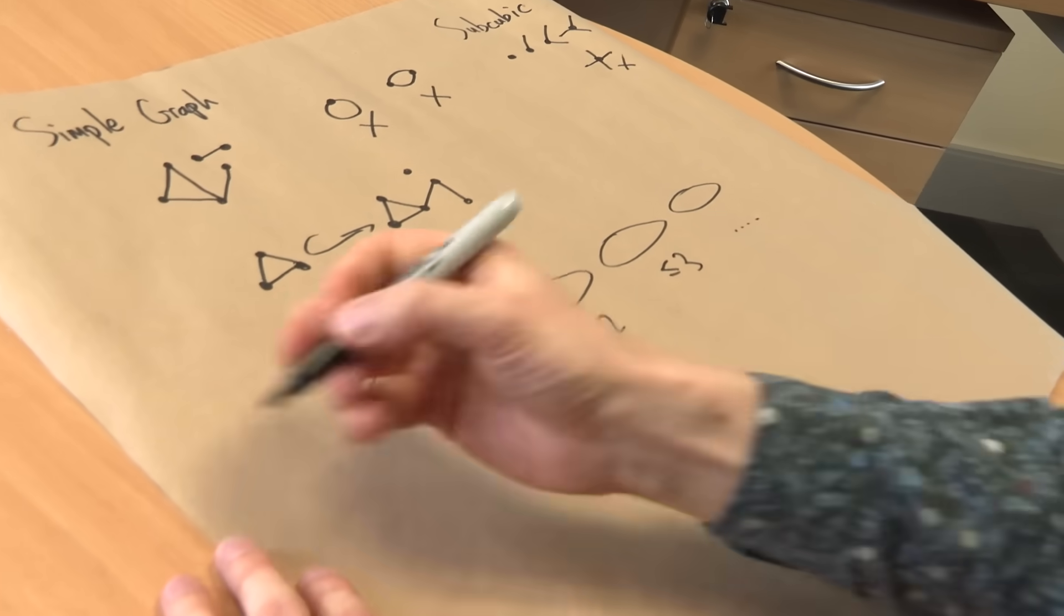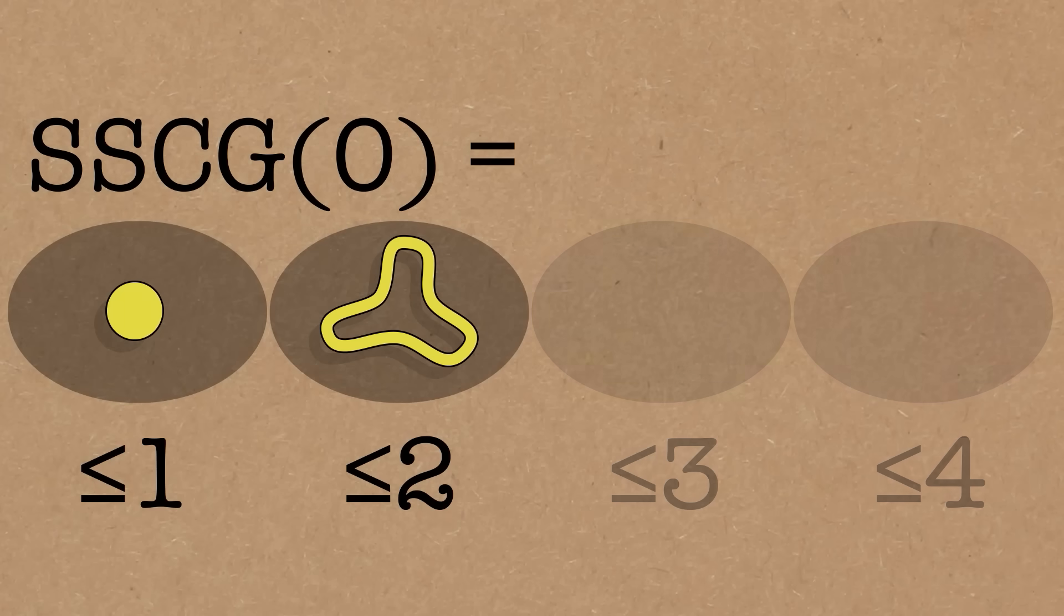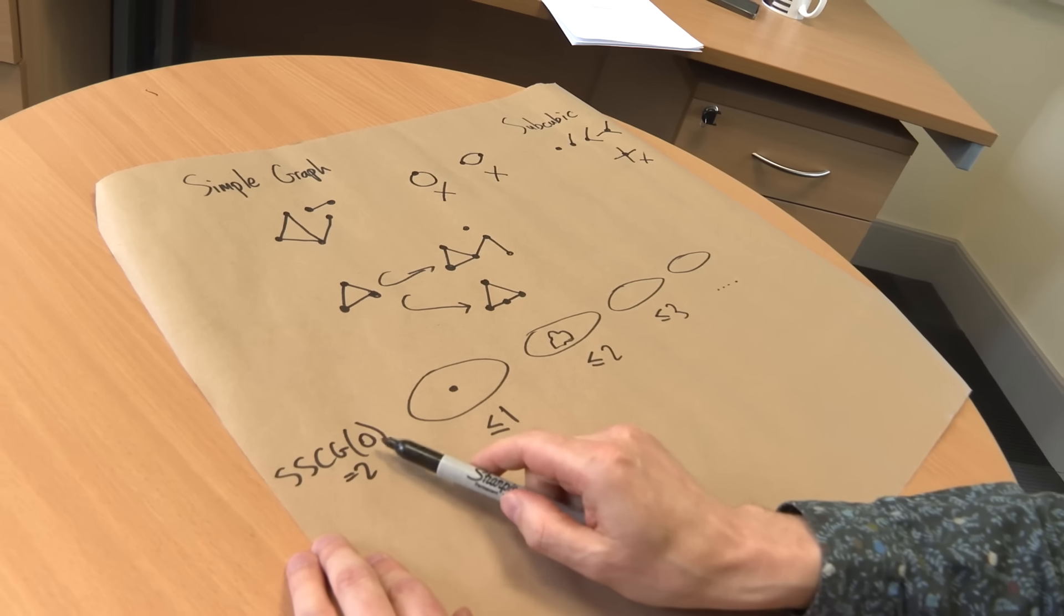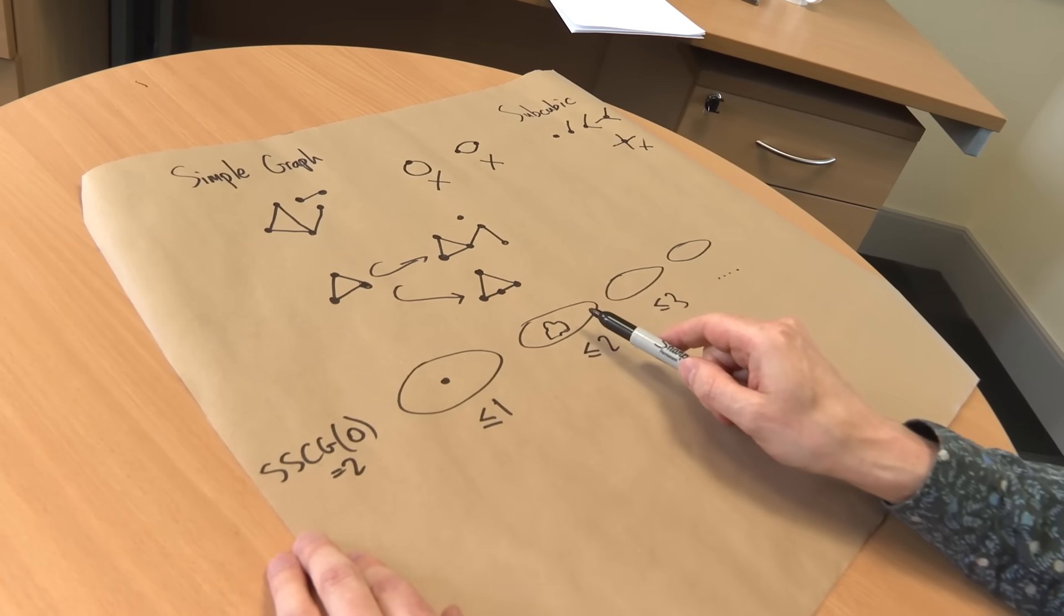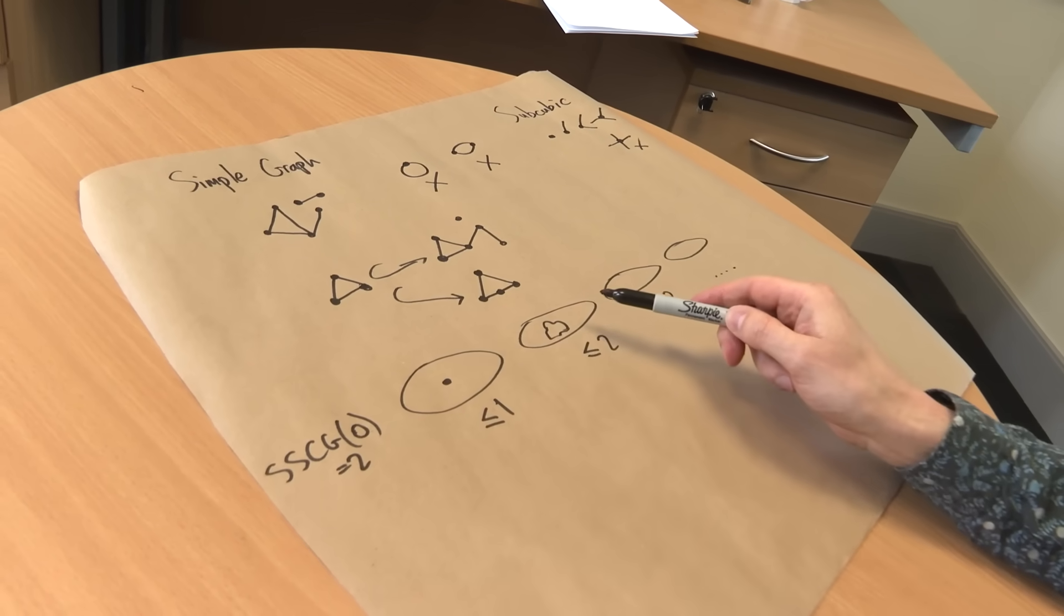So that's not terribly exciting. And what I'll write here is SSCG0 equals 2. So a simple subcubic graph, and then the zero we'll come back to in a moment, is 2, because that's the longest sequence we could do. We could have made a shorter sequence. We could just put the zero graph straight away. This is the longest one we can do.